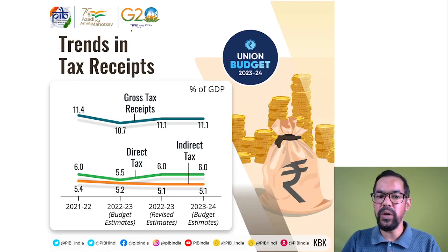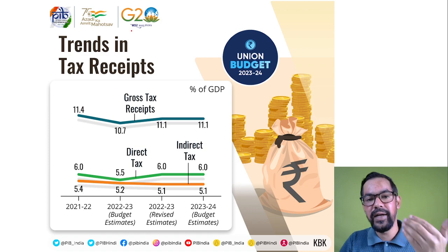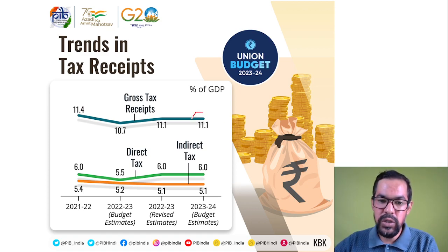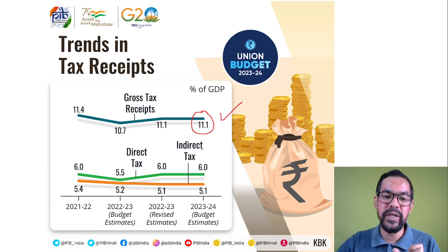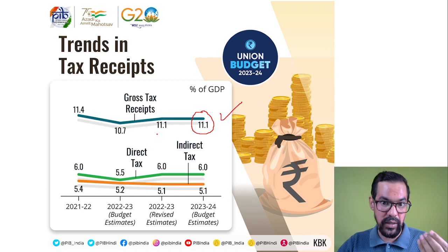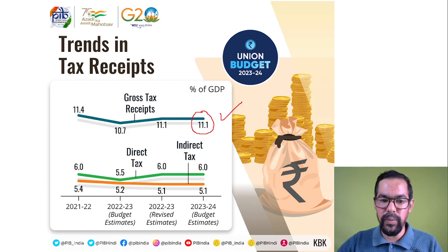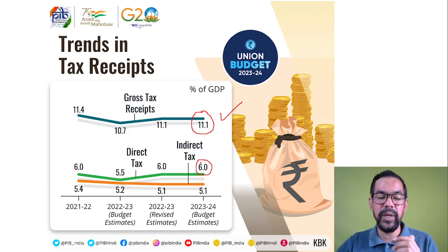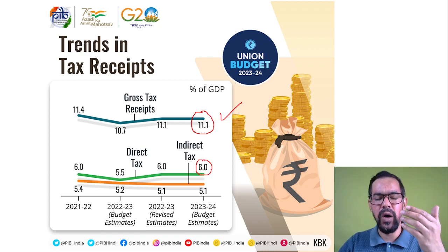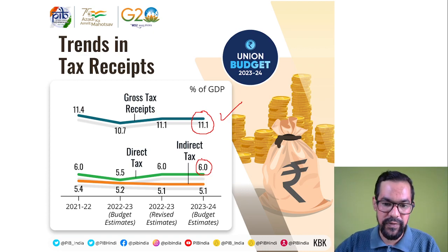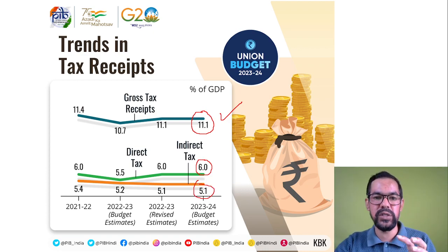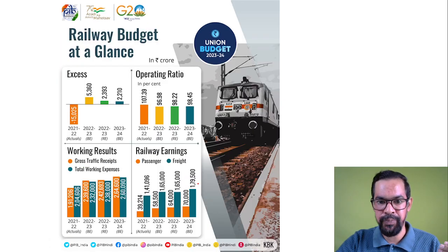On tax receipts: GST plays a major role and is planned to contribute around 11.1% of India's GDP — similar to the current financial year 2022-23. Direct taxes are at a similar rate of around 6%, as this year income tax slabs were changed and rates reduced for the extra rich. Indirect taxes contribute 5.10%. This is the overall contribution of direct, indirect taxes, and GST toward the Indian economy relative to GDP.